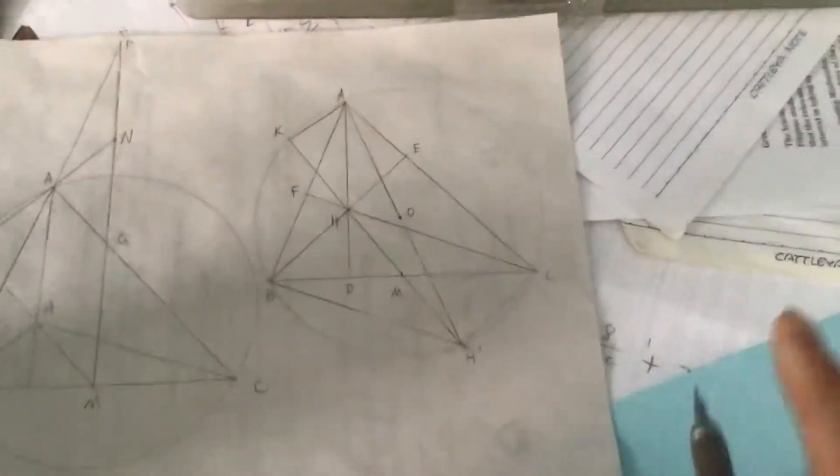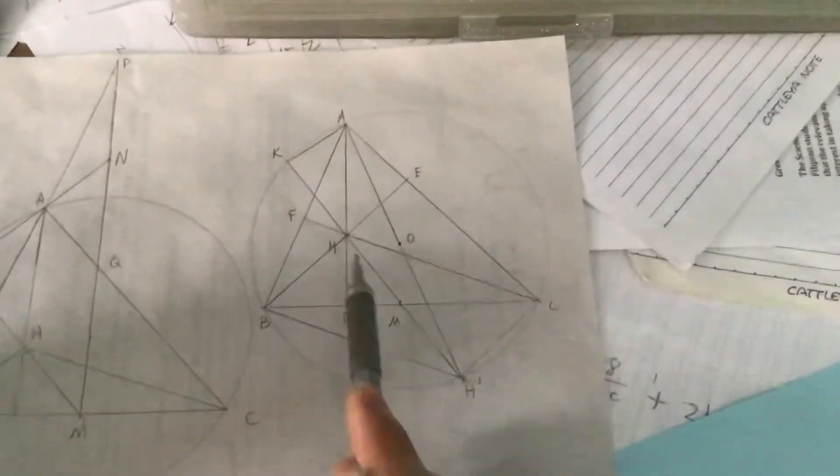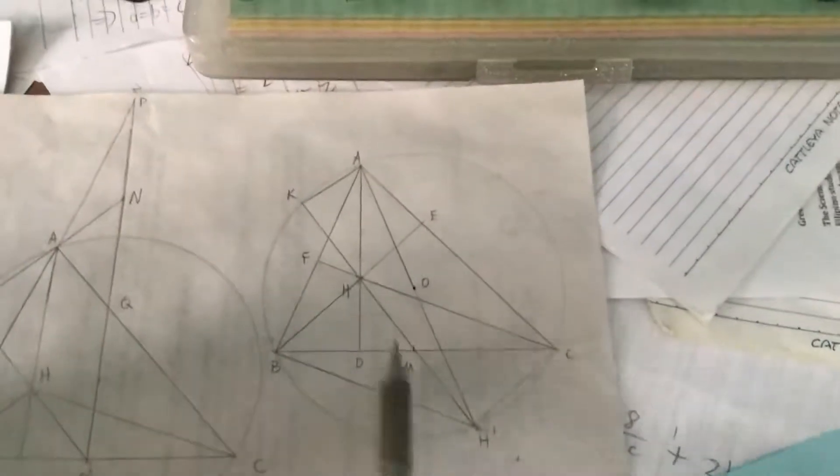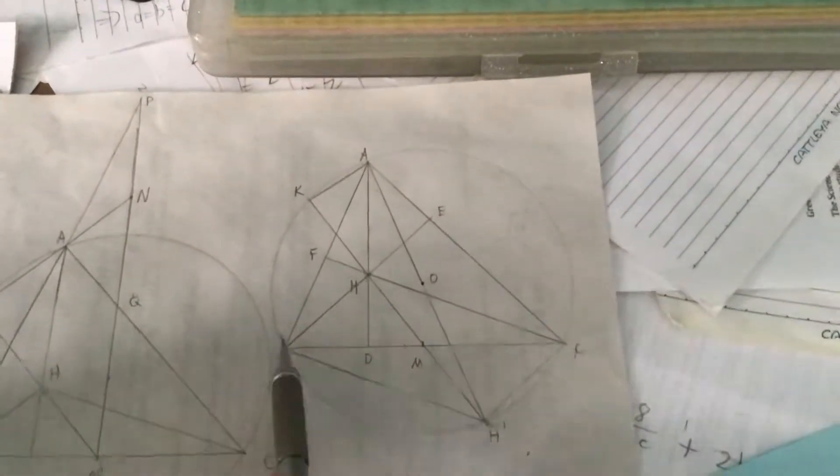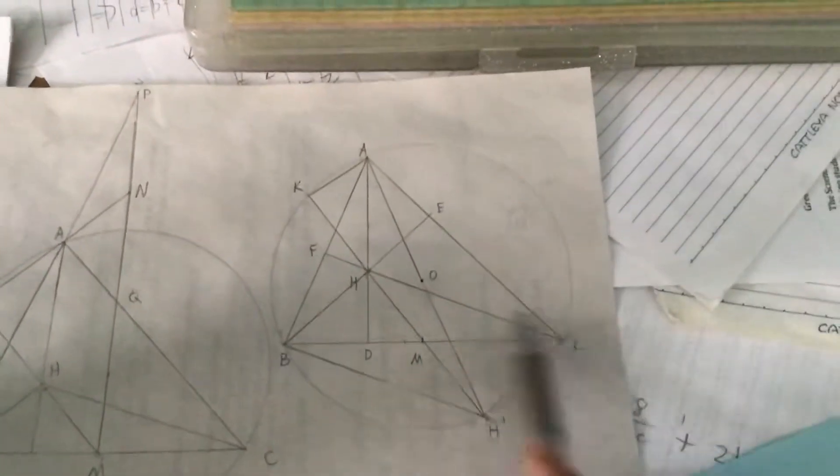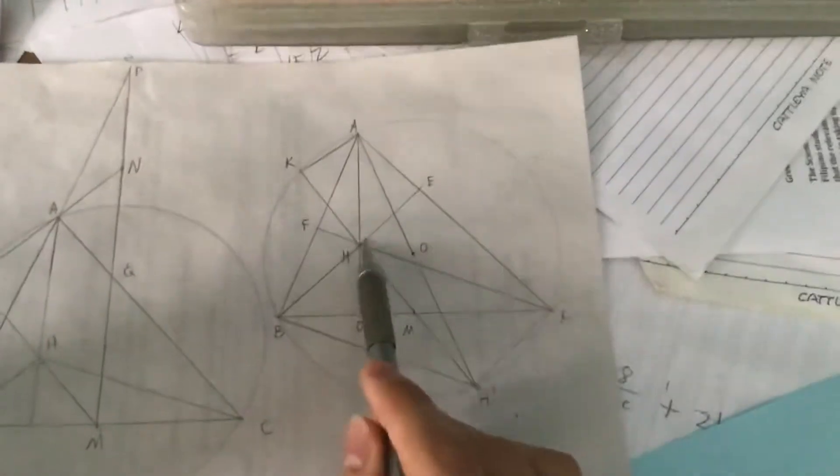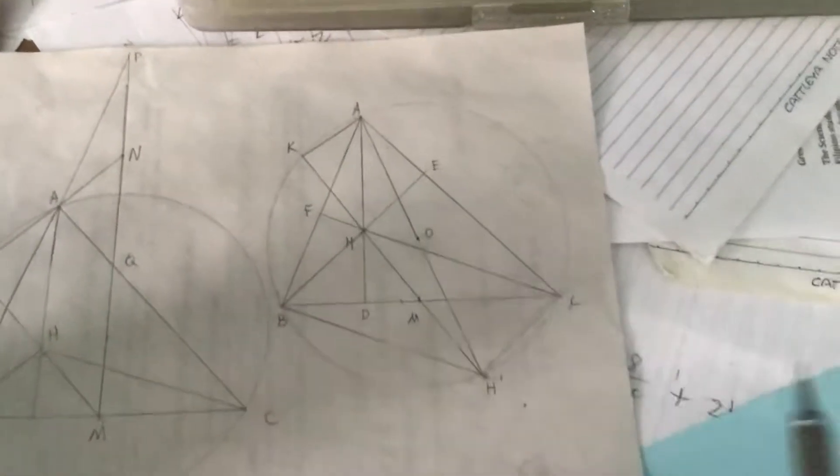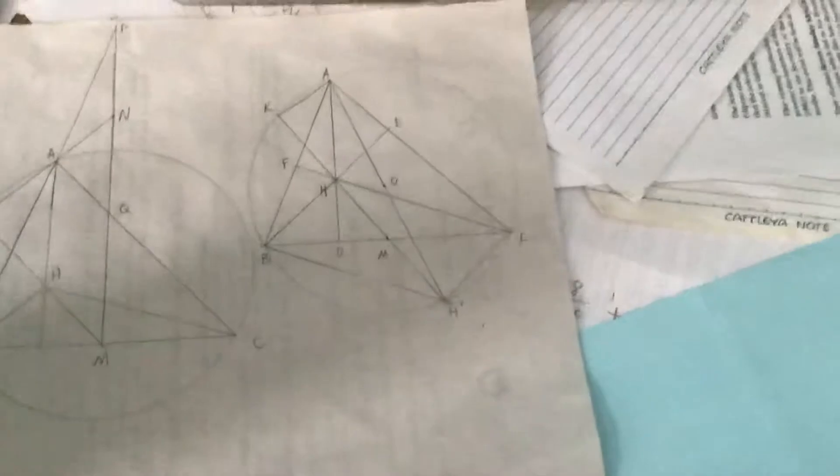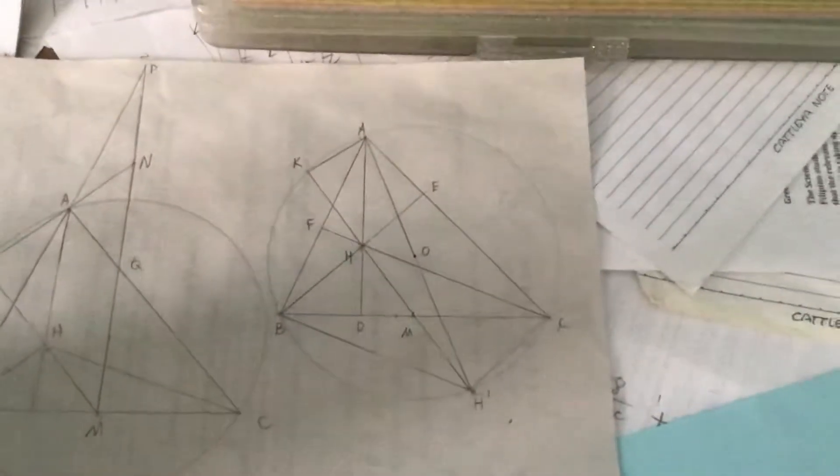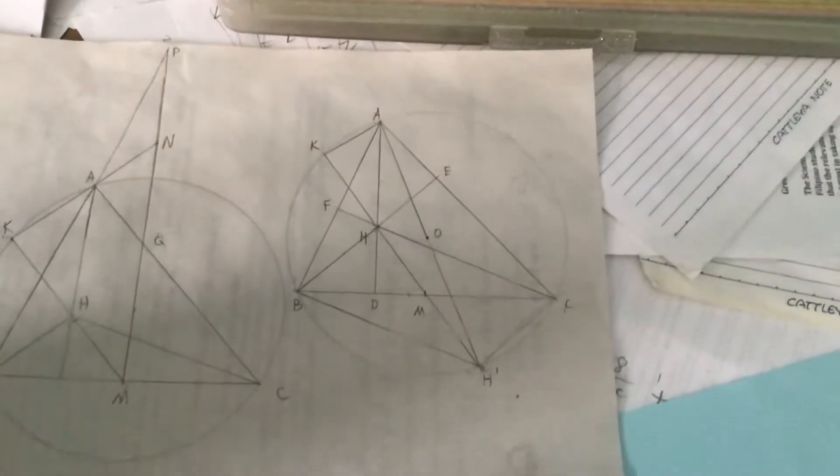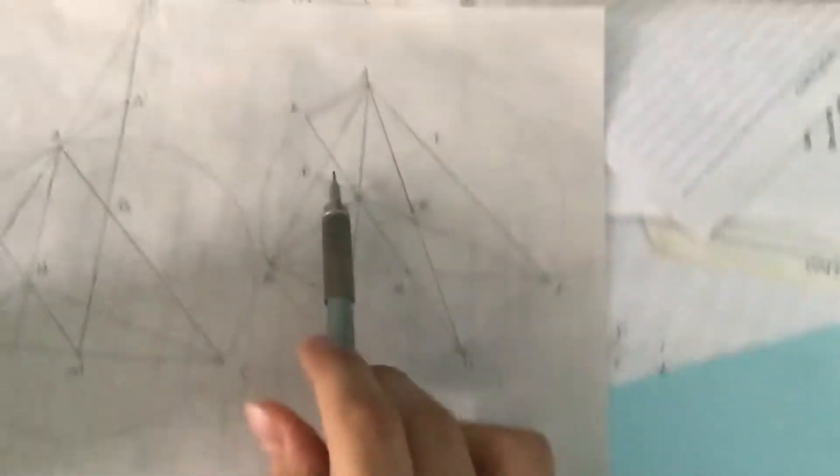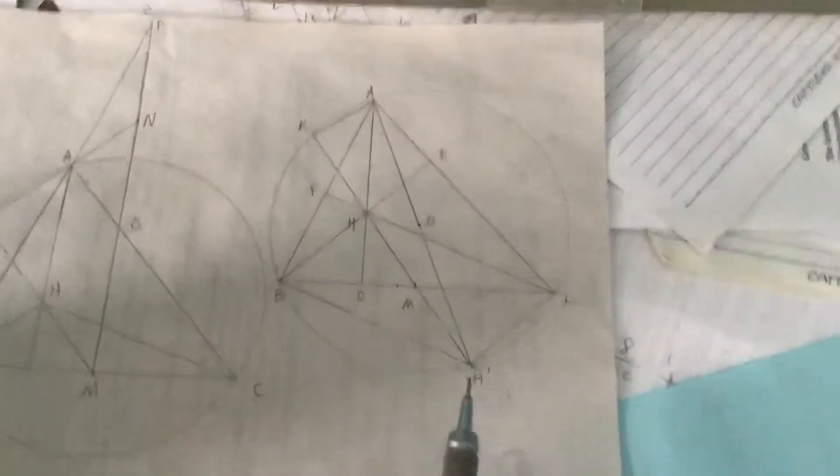So the proof of this is as follows. First of all, since HM equals MH prime and BM equals MC, the diagonals of this quadrilateral bisect each other. We get that this thing is a parallelogram. How do you rigorously prove that? But yeah, it should be obvious that it's a parallelogram.